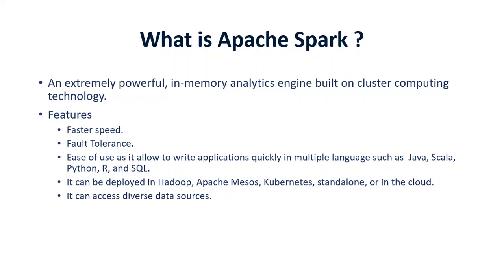Let's talk about the features of Spark. As we know, it's in-memory, so it's very fast. It has fault tolerance, which means in case of any node failure or crash, we don't lose data. The third feature is that it's easy to use, because it has high-level APIs in multiple languages. That's why it's easy to use — it gives programmers the choice to work in their preferred language.